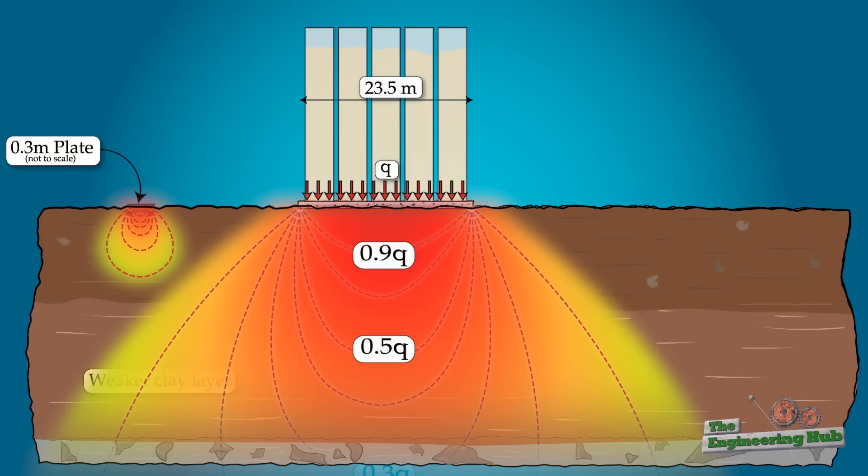Based on the stress contours we saw earlier, the induced stress from the full-scale foundation would have induced significant stresses in the weaker clay. These stresses manifested in consolidation of the lower clay layer, which resulted in an initial settlement and the full bearing failure shortly after.